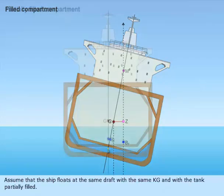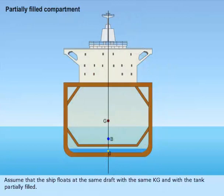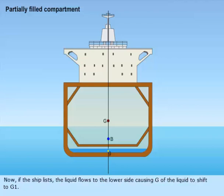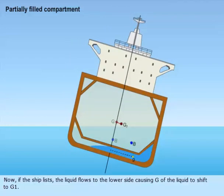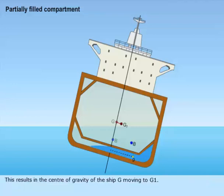Assume that the ship floats at the same draft with the same KG and with the tank partially filled. Now, if the ship lists, the liquid flows to the lower side, causing G of the liquid to shift to G1. This results in the center of gravity of the ship G moving to G1. This effect is called the free surface effect.